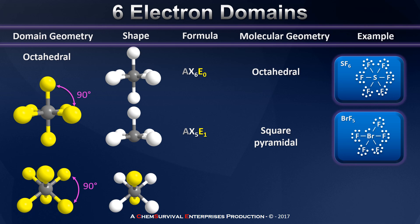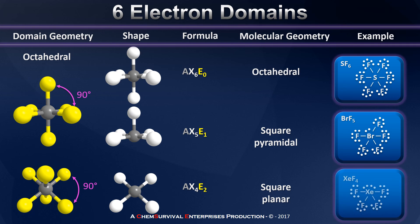Finally, let's consider what happens when we have two lone pairs in the octahedral domain geometry. Adding the second lone pair, I need to place them at opposition to one another — on completely opposite sides of the molecule — so they're as far apart as possible. This AX4E2 compound has two lone pairs at opposing sides, and when I remove their appearance but not their influence, I get a compound that traces out a square, with the central atom in the same plane as all the other atoms. So we call this square planar. An example is xenon tetrafluoride, wherein the xenon has four bonding electron domains and two lone pairs.